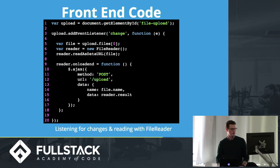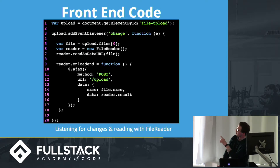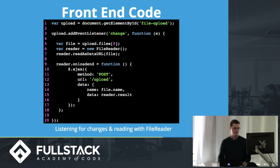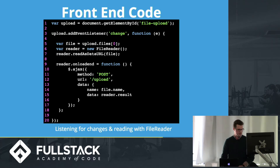Then what you want to do is get the first file — at the 0th index of that files array — save it, and then use the reader to read the file as a data URL. Once it's finished encoding in base64, you'll trigger the onloadend event and make an Ajax request to your backend. It's going to be a POST method. Another key thing — on line 15 — the data you want to send is reader.result, which is going to be your encoded string.